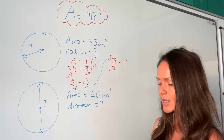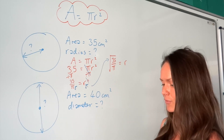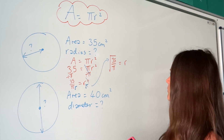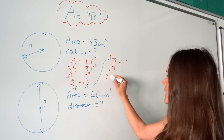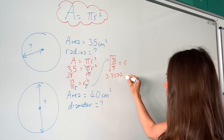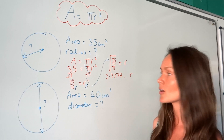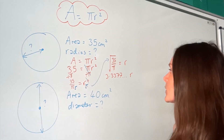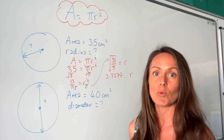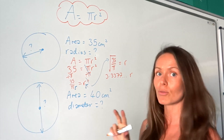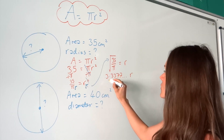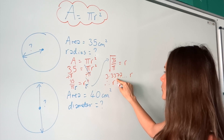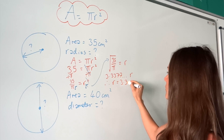You have to put that in the calculator — press the square root button, and then 35 divided by pi, which gives me 3.3377... So that's the radius. Just be careful with rounding; the question might ask for one decimal place or three significant figures. I'm going to round to three significant figures: the radius is 3.34.